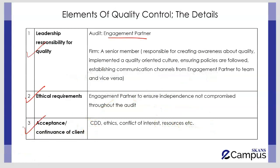The first element is leadership responsibility for quality. For an individual audit, it's the engagement partner who is responsible for making sure quality is not compromised and quality control procedures are followed. At the firm level, there needs to be a senior person given this responsibility — responsible for ensuring there is a culture focused on quality, relevant policies are followed, awareness about the importance of quality, and proper communication channels throughout the team.